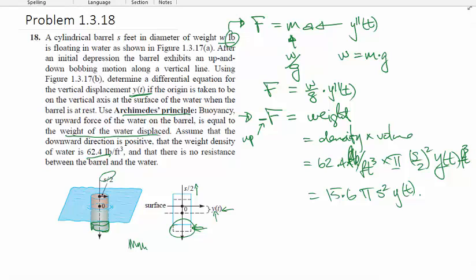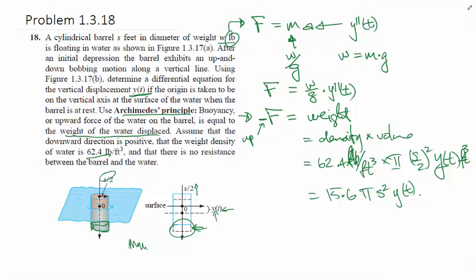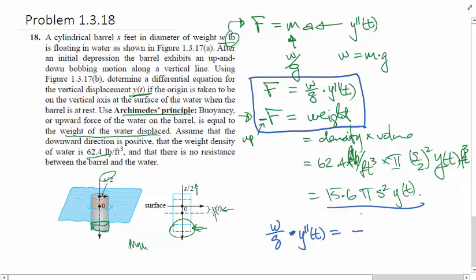Now what we can do is we can combine, let's make sure that we include the negative sign. Combine the two forces together, and this is the second force. So if we take this over to the other side, we have force is equal to force. That's weight over gravity times the second derivative of the position is equal to, and now let's throw that negative sign over here, negative fifteen point six pi s squared y of t.